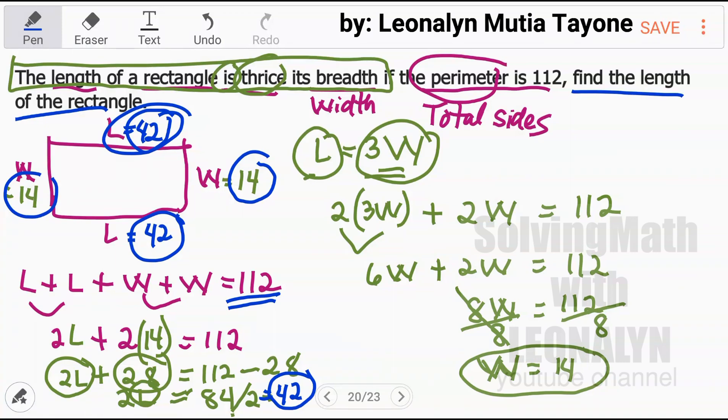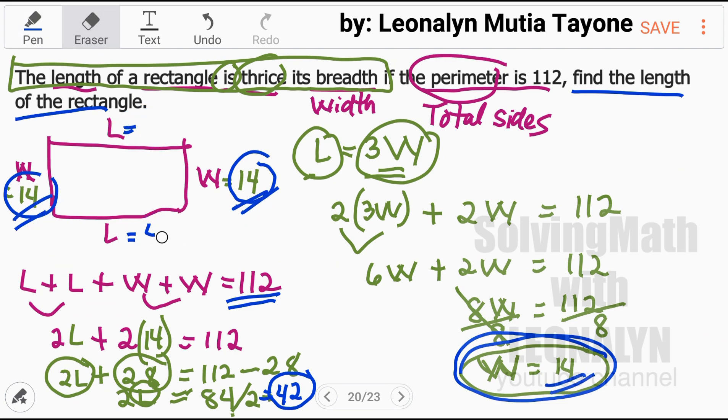Another way, once you know that the width equals 14, you have 14 here. Add that 14, that is 28. So the total perimeter is 112. 112 minus 28 equals 84.